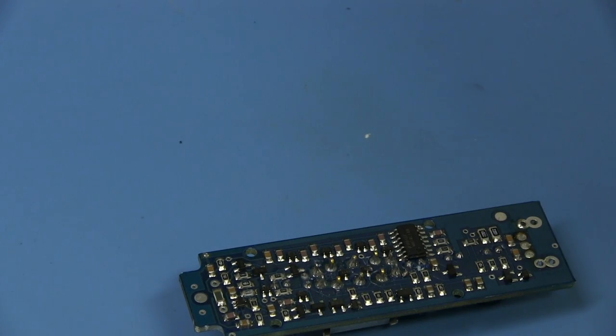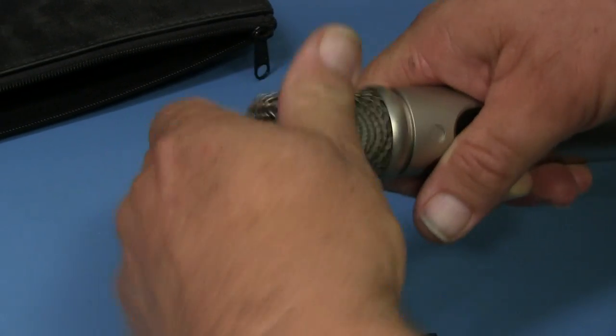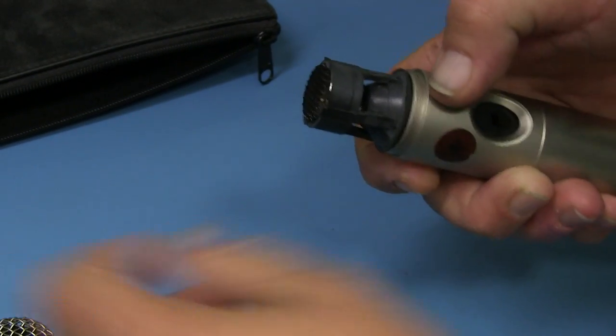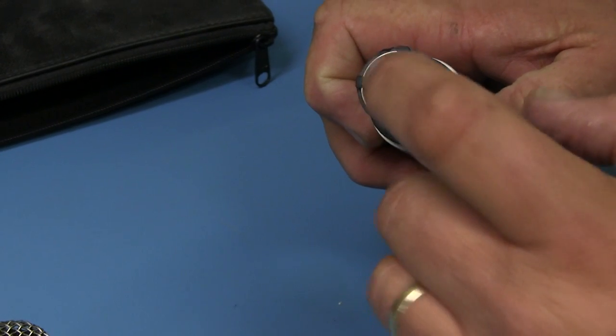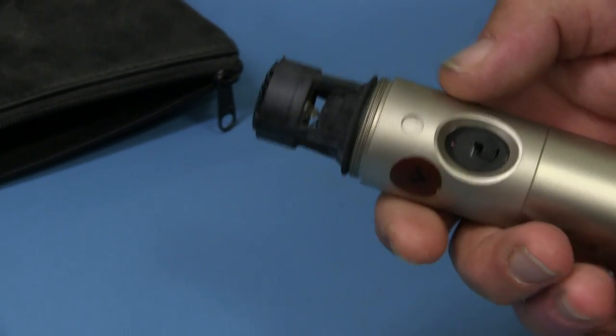But inside, now this is going to make a mess of the microphone, I'm sure. First of all, if we take the top off, we can see the externally polarised 19mm condenser capsule.